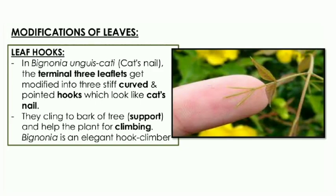In Bignonia (cat's nail), the terminal leaflets get modified into three stiff curved pointed hooks which look like a cat's nail. These rigid curved hooks cling to the bark of trees, helping the plant climb. Bignonia is a weak-stemmed plant that climbs with the help of these leaf hooks.